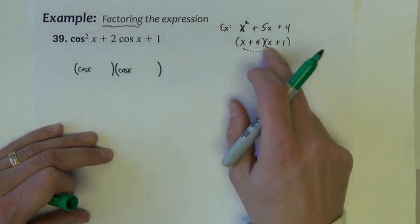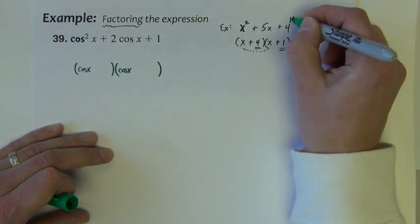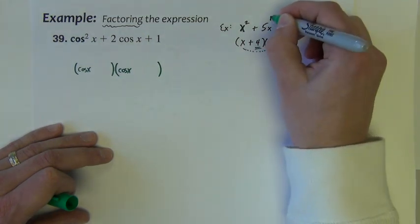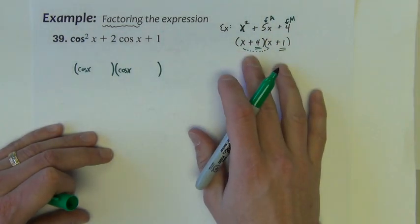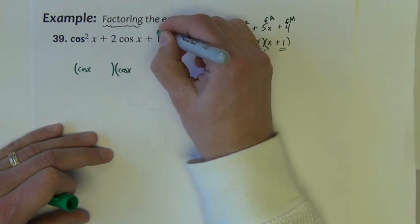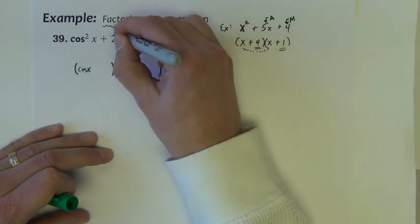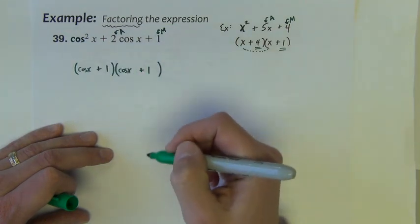Well, then how did we finish this? We wanted two numbers here that multiplied to the 4 and added to the 5. And it completed our factoring. Same thing here. Can we come up with two numbers that multiply to 1 and add to 2? And certainly we can. It would be positive 1 and positive 1.